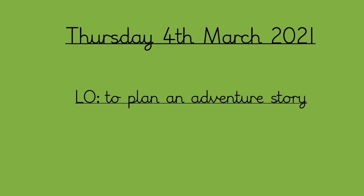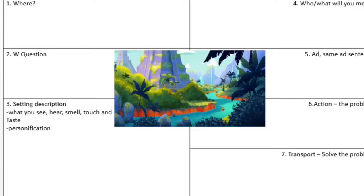Today we are going to plan the second half of our story plan. Our learning objective is going to be the same — to plan an adventure story. Yesterday we went through sections 1, 2 and 3. Today we're going to go through sections 4, 5, 6 and 7.